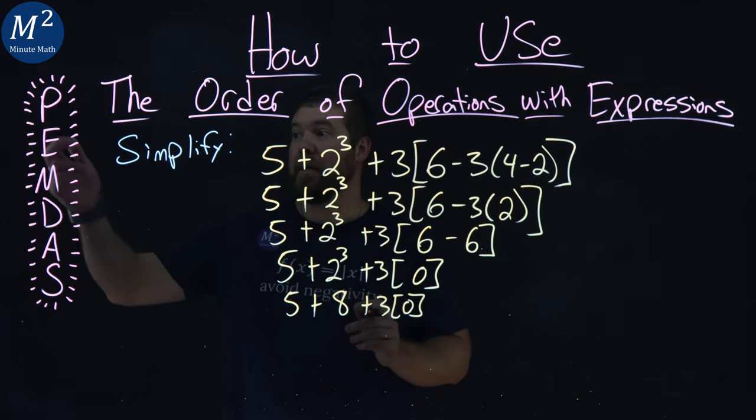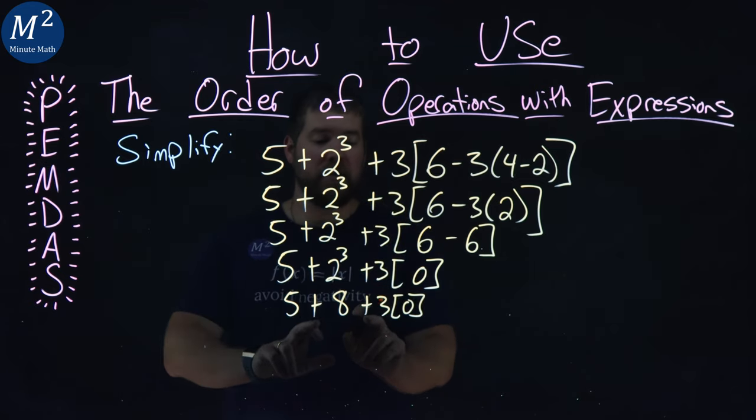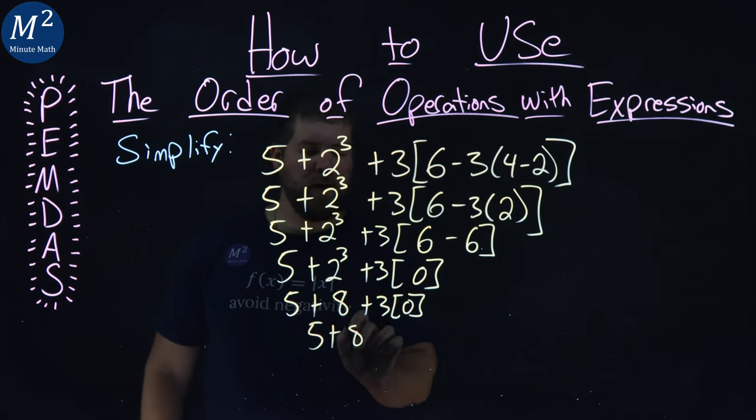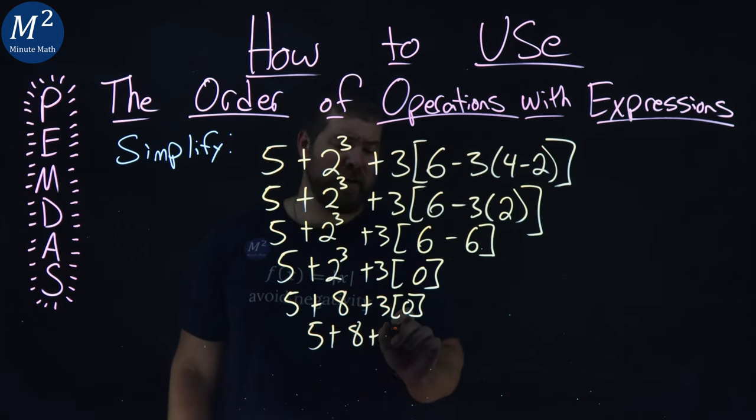Order of operations then tells us multiplication is our next one down. We got addition here and then 3 times 0. So we have 5 plus 8 plus 3 times 0, which is 0.